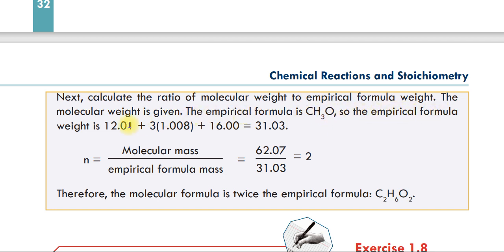The empirical formula weight is 12.01 plus 3 times 1.008 plus 16 divided by 34, which is equal to 31.03. Carbon is equal to 1.0, hydrogen is equal to 3.0, oxygen is equal to 1.0. This is the compound in the empirical formula CH3O.